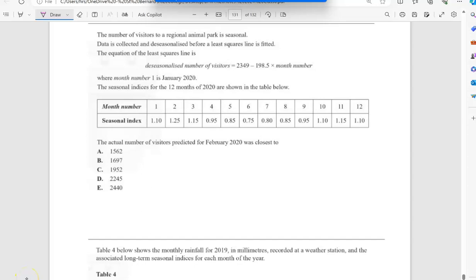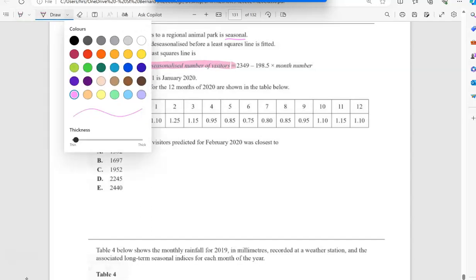Okay, so here we've got exam questions on forecasting and fitting a trend. The number of visitors in a regional animal park is seasonal. The data is collected and de-seasonalized. You can see here they're giving you a formula for de-seasonalized data, so just be wary that's going to tell me what a de-seasonalized value is.